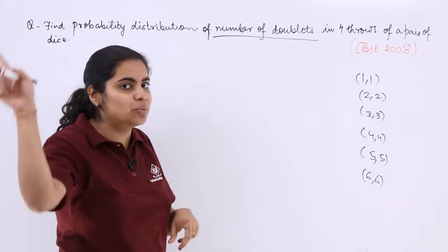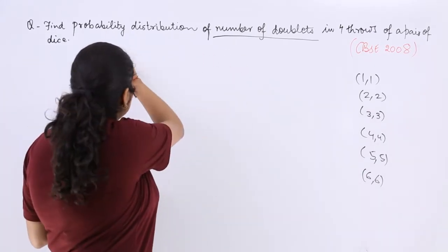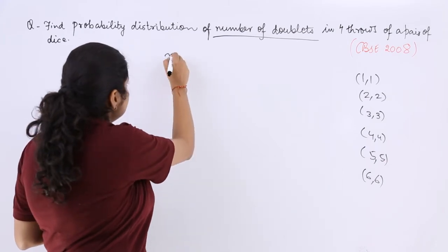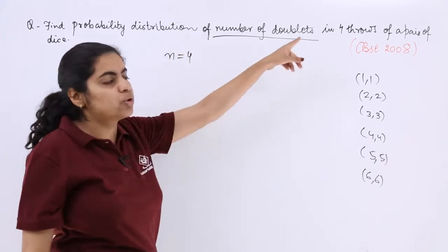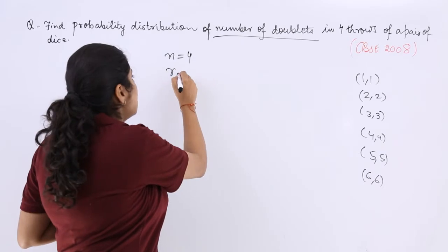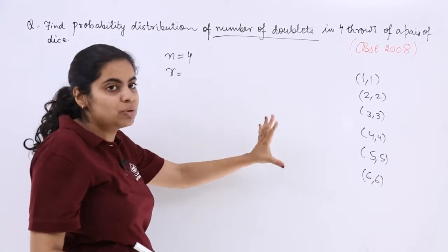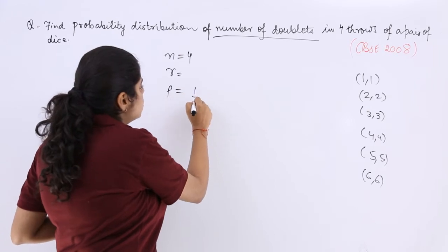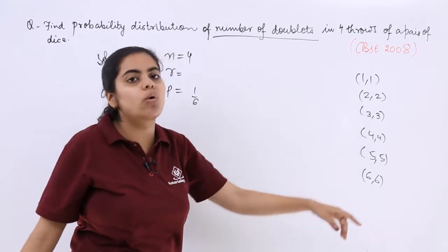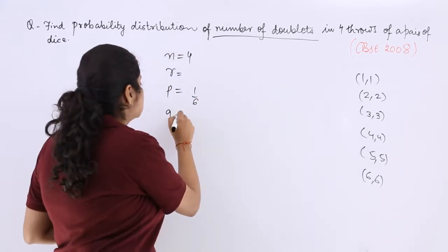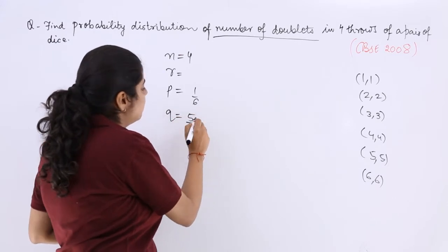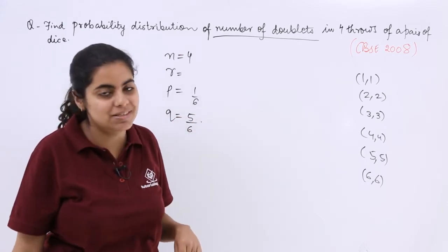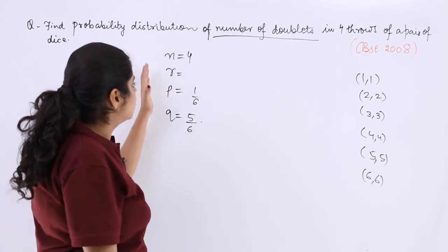Now for P and Q you have to watch the previous video. I write solution and directly start with it. n is four because four throws. r is what we have to consider, let's wait for it. Then P is the probability of success which is one by six because six over 36. Q is the probability of failure which is five by six, one minus one by six.